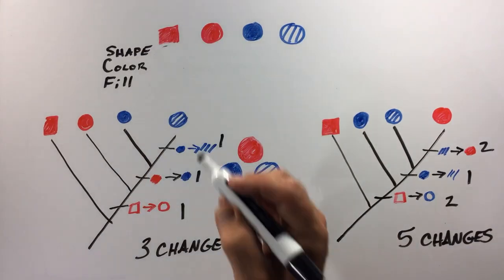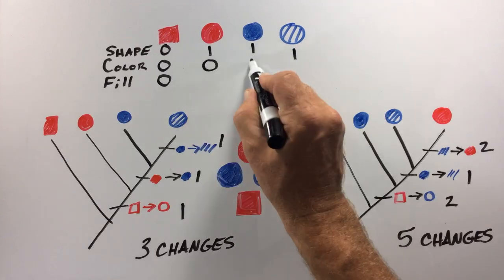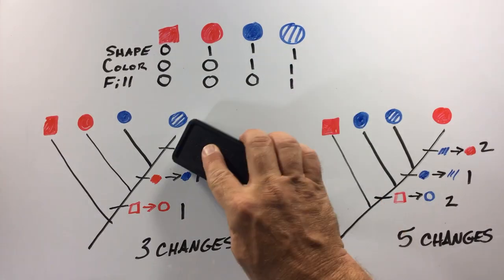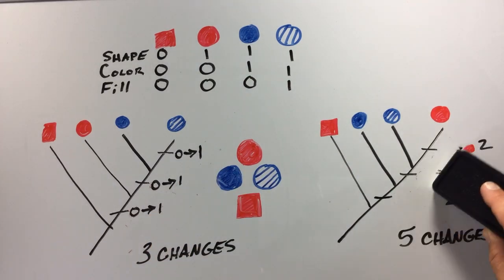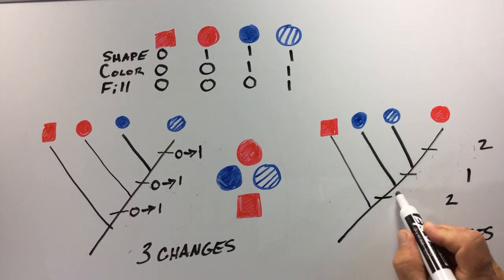For phylogenetic studies, researchers will often code the data numerically which makes analysis easier. In this example, the ancestral traits are coded with a zero and derived or traits that have changed are coded with a one.